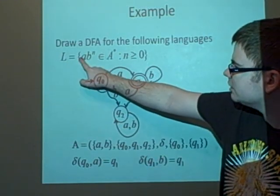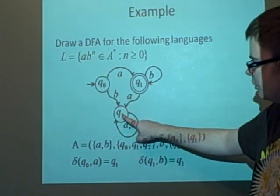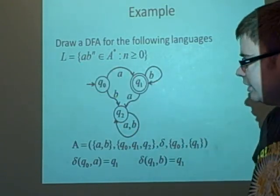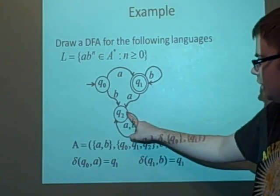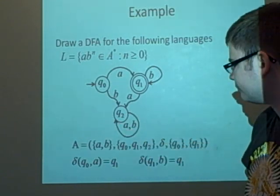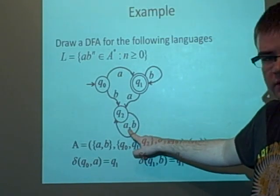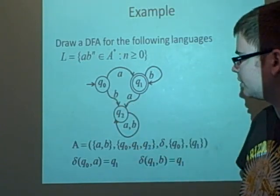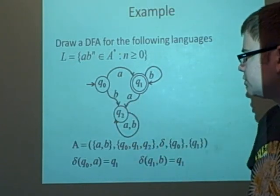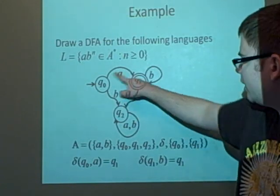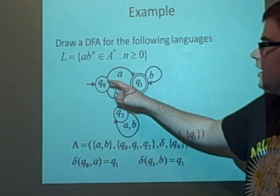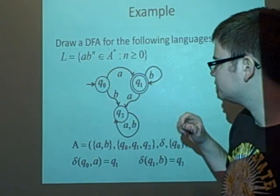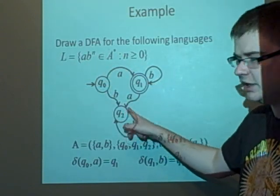However, if we start with a b instead of an a, we go to a sink state q₂, because we can't have an element starting with b. Once we're here, both a and b loop back to q₂. Also, from q₁, if we have another a after the b's, that's not recognized in the language, so the a from q₁ also goes to the sink state.